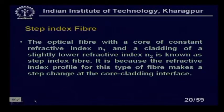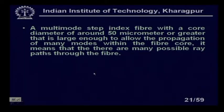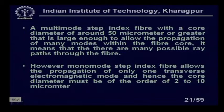A multimode step index fiber with a core diameter of around 50 micrometers or greater allows the propagation of many modes, meaning there are many possible ray paths through the fiber. Monomode step index fiber allows propagation of only one transverse electromagnetic mode, and hence the core diameter must be of the order of 2 to 10 micrometers.